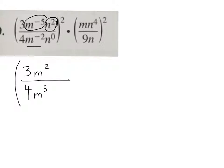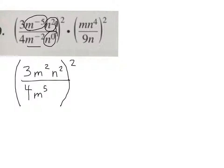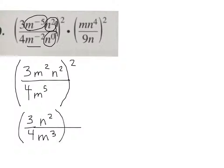Now, n to the second divided by n to the zero — what is 2 minus 0? 2. So that's going to be n squared on top. And that's all squared. Let's simplify one more step. I have m squared divided by m to the fifth, so I'm going to do 5 minus 2, which is 3. My m cubed — does it go on top or bottom? Bottom. So I've got 3 over 4, and on bottom I have m cubed, and on top I have n squared. And then I'm going to square it.